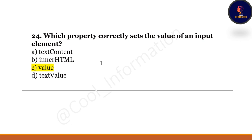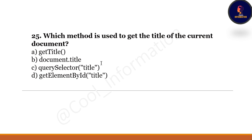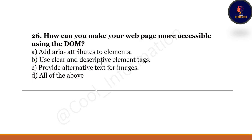Next question: Which method is used to get the title of the current document? The correct option is B — document.title is used for that. Next question: How can you make your web page more accessible using the DOM? The correct option is D — all three: add ARIA attributes to elements, use clear and descriptive element text, and provide alternative text for images.